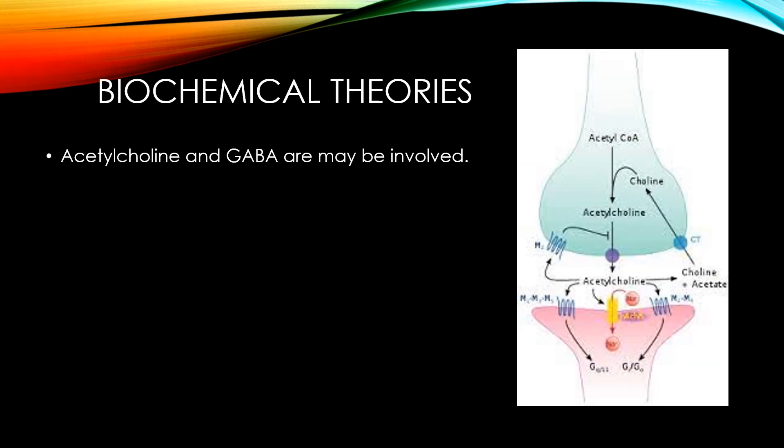Sometimes acetylcholine and GABA are also abnormal. A lot of other neurotransmitters are being researched and we are coming to know newer ones that are involved. At minimum, remember the main ones — serotonin and catecholamines — as acetylcholine and GABA can also be abnormal and involved in these illnesses.